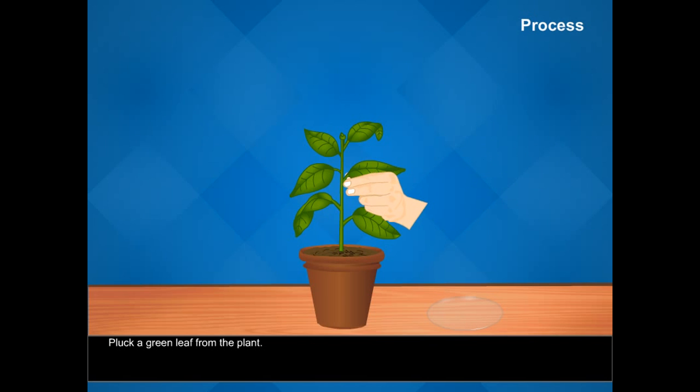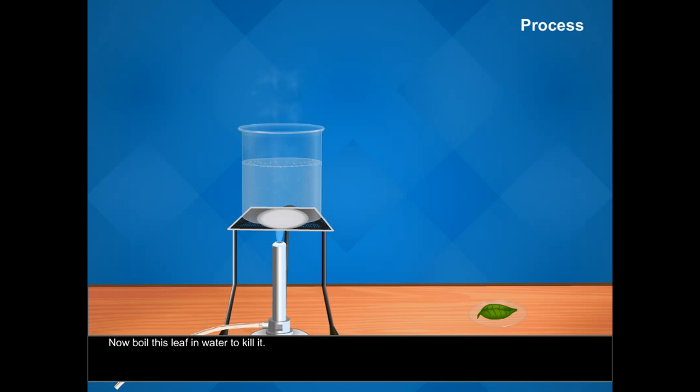Pluck a green leaf from the plant. Now boil this leaf in water to kill it.